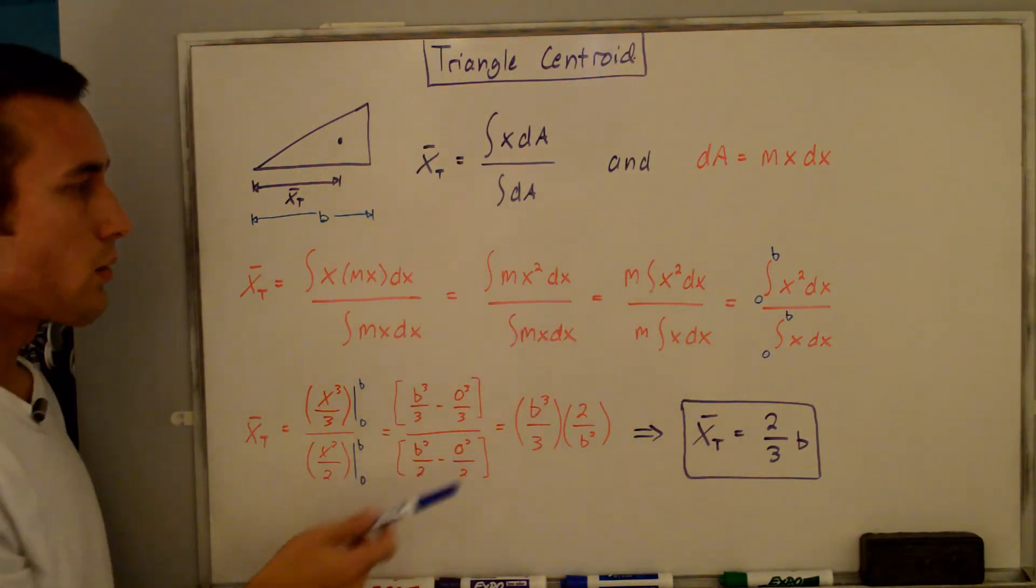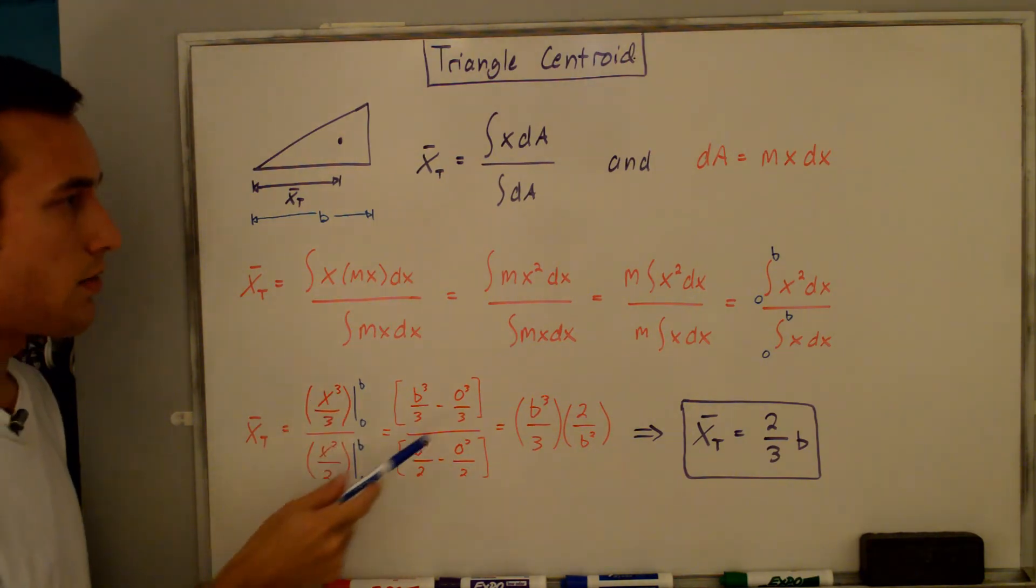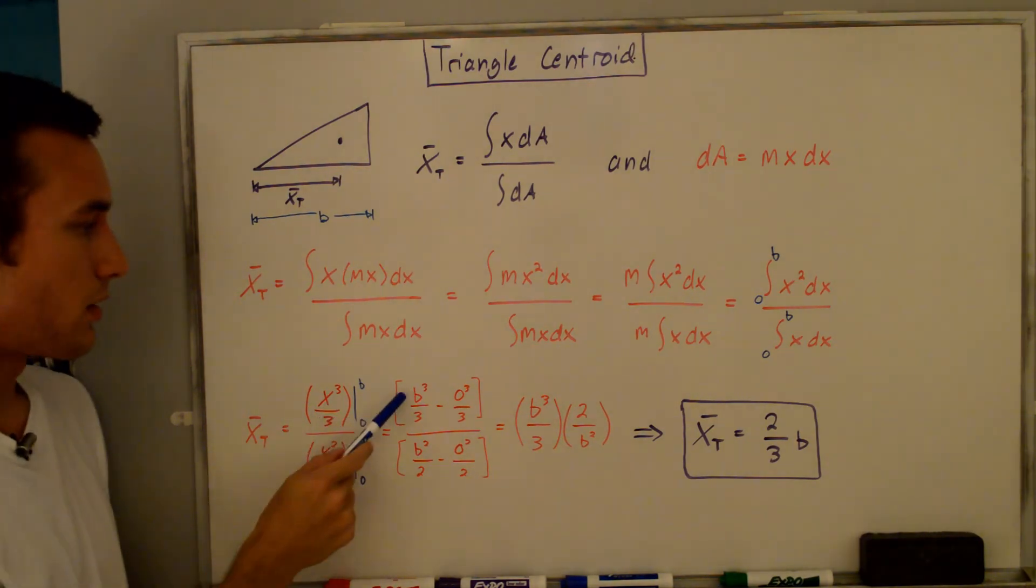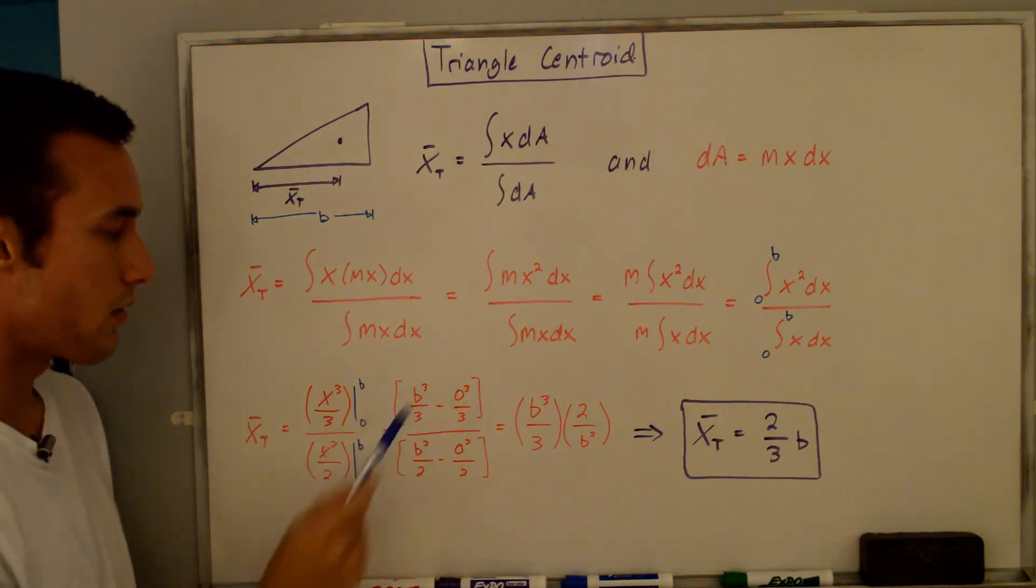If we integrate the numerator, we get x³/3 from zero to b. For the denominator, we get x²/2 from zero to b. Evaluating these expressions, we get b³/3 minus 0³/3 in the numerator.